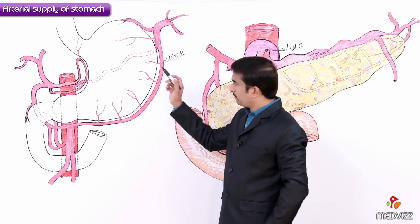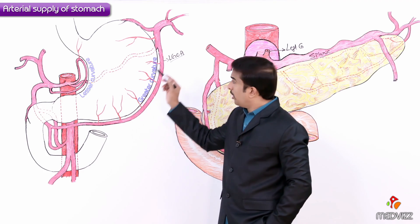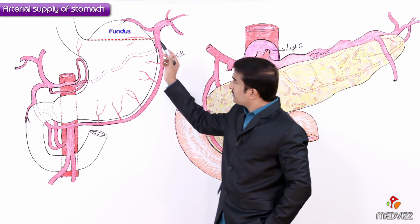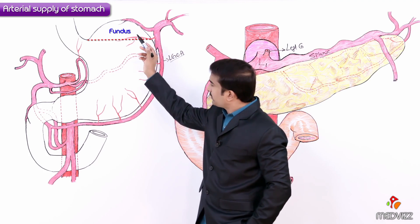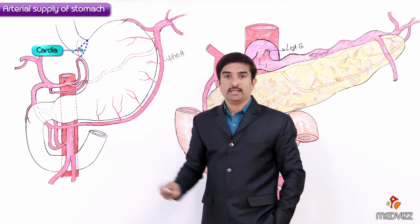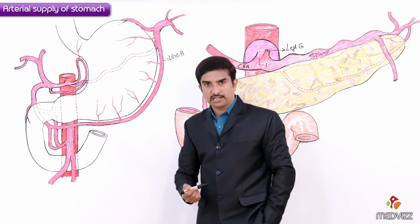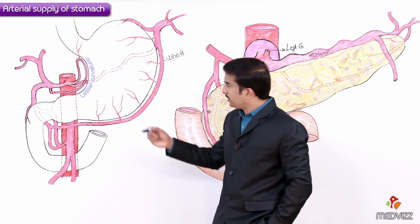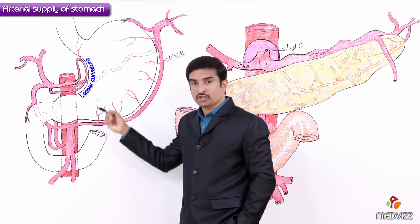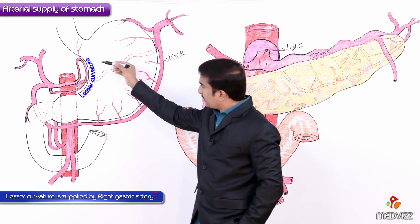The headings are: arterial supply of the lesser curvature, arterial supply of the greater curvature, arterial supply of the fundus of the stomach, as well as the cardiac end of the stomach. First, let me talk about the arterial supply of the lesser curvature.